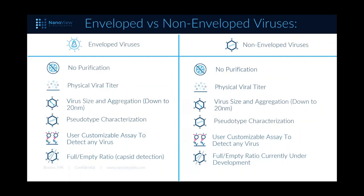Regarding enveloped versus non-enveloped viruses: the Lentiview assay is tuned for VSVG capture and lentivirus, but just like the Bioflex chip concept, any sample using viruses normally bigger than 50 nanometers can use this method. Benefits are the same for both enveloped and non-enveloped: no purification required, physical titer, virus size and aggregation, pseudotype characterization, and user customizability. If you have a good targeting molecule to capture your virus of interest, you can use the Flex chips to size particles, identify what proteins they hold, and sense whether they're intact or fragmented. For non-enveloped viruses, detecting genomic material is not currently available, but detection of multiple proteins and size definitely is.